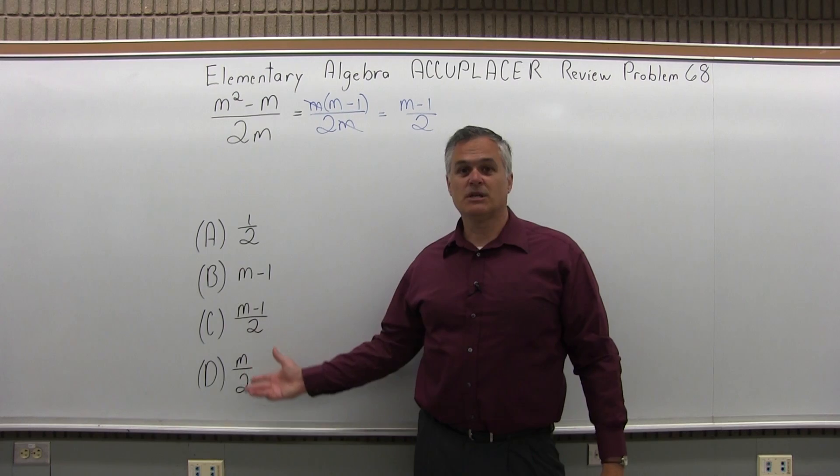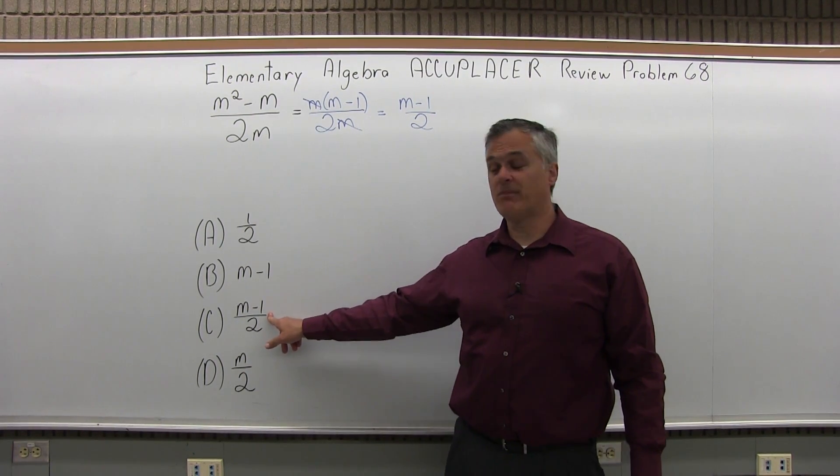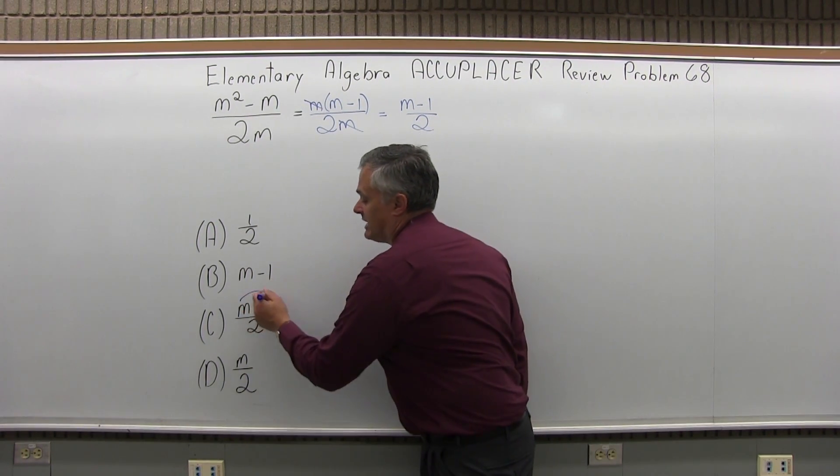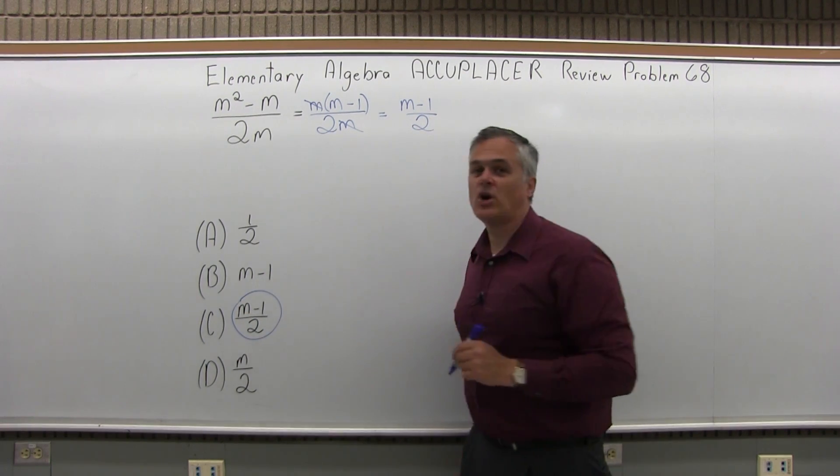And if I look through my list of potential options, option c is an exact match, m minus 1 over 2. So the answer to problem 68 is option c.